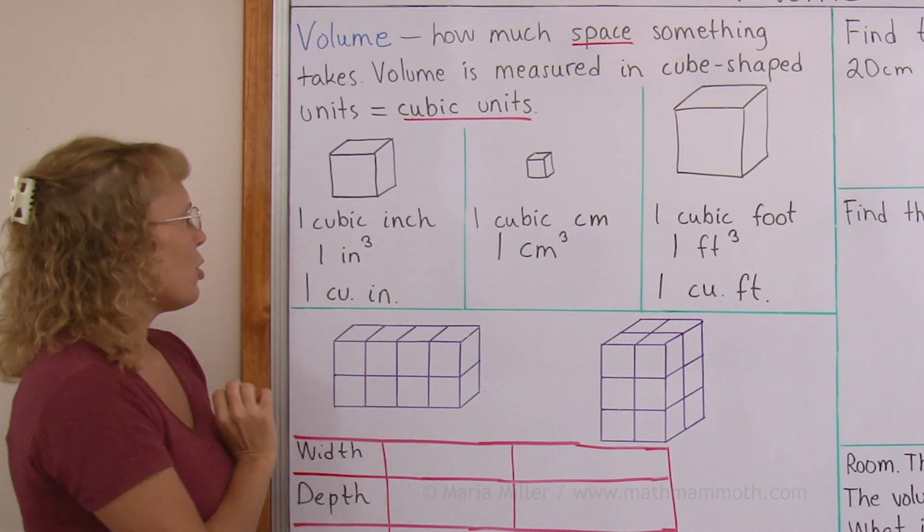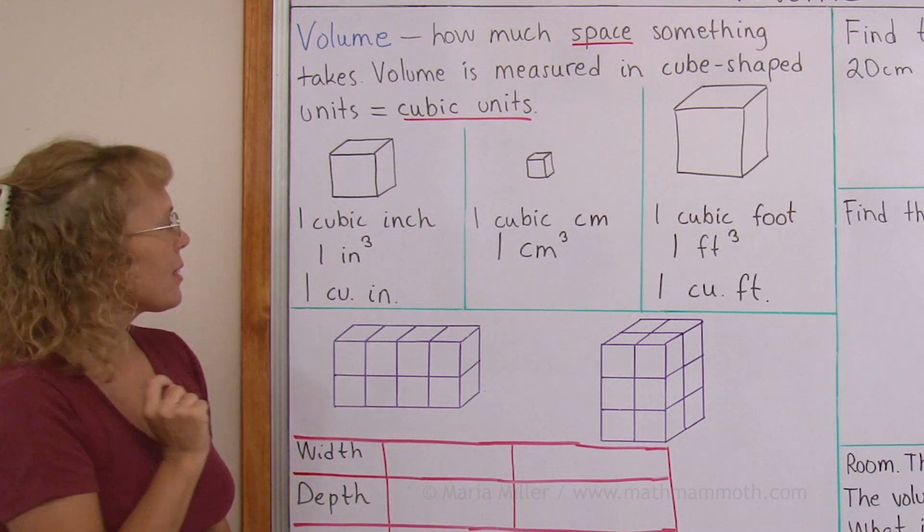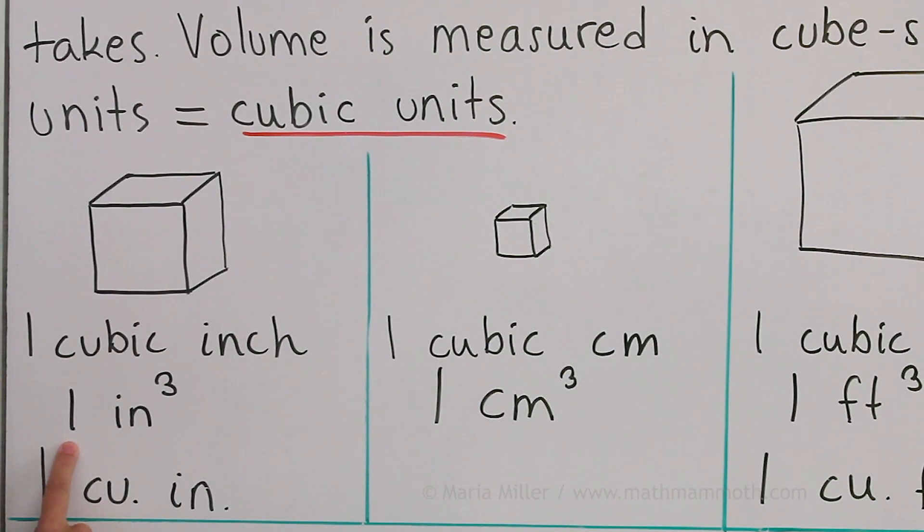We can abbreviate one cubic inch in two ways. For example, one and then in as for inch and then an elevated three, or one cu in.